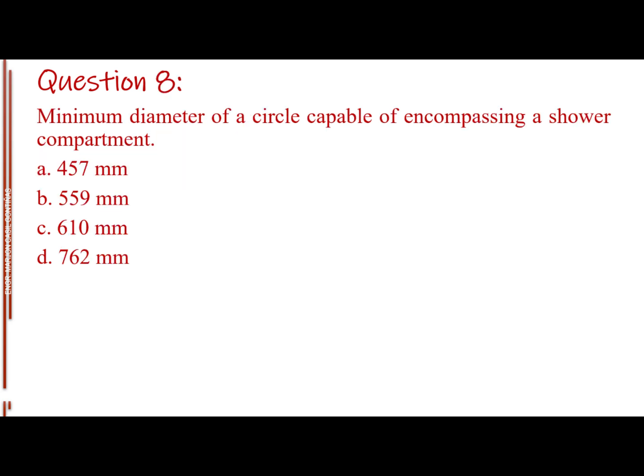Question number 8, minimum diameter of a circle capable of encompassing a shower compartment. Letter A, 457 mm, letter B, 559 mm, letter C, 610 mm, letter D, 762 mm. The answer is letter D, 762 mm.